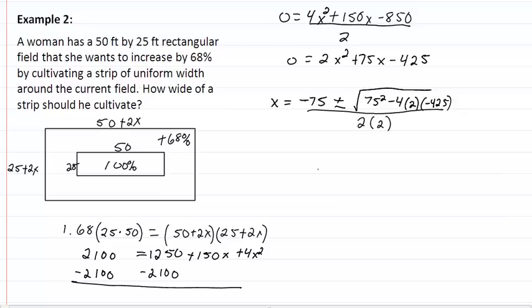And so that's going to give us a negative 75 plus or minus 95 all over 4. We're going to totally ignore this negative. We have negative 75 minus 95, we get a negative answer. We're not interested in it. So we'll do the other, which means 20 over 4. So we get x is equal to 5.